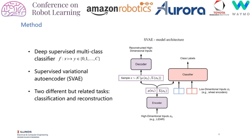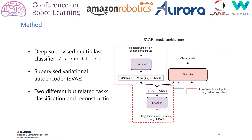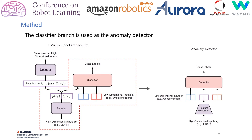For the training of such a multi-class classifier, we propose the use of a supervised variational autoencoder model. The network focuses on two different but related tasks: classification and reconstruction. The right branch tries to classify the current state of the robot correctly, and the left branch follows the VAE structure which tries to reconstruct the sensor signals. During training, the overall loss consists of a reconstruction term and a classification term. During inference, we abandon the reconstruction branch and use the classification branch as the anomaly detector. The robot state is determined by the argmax of the probability over all possible class labels.